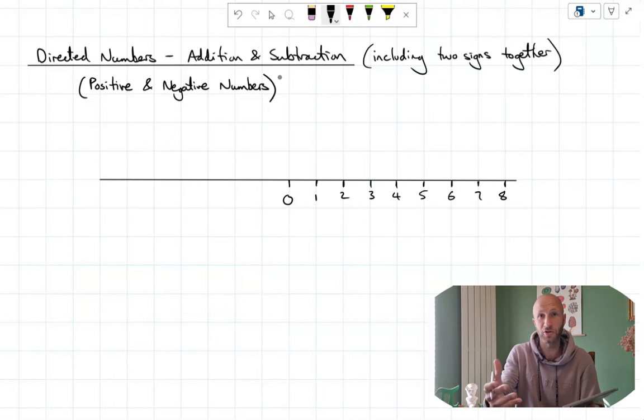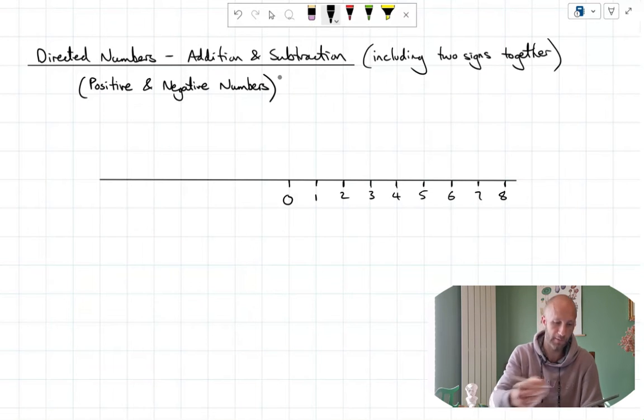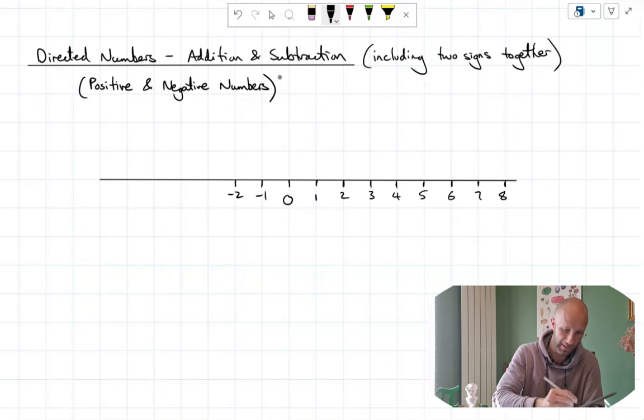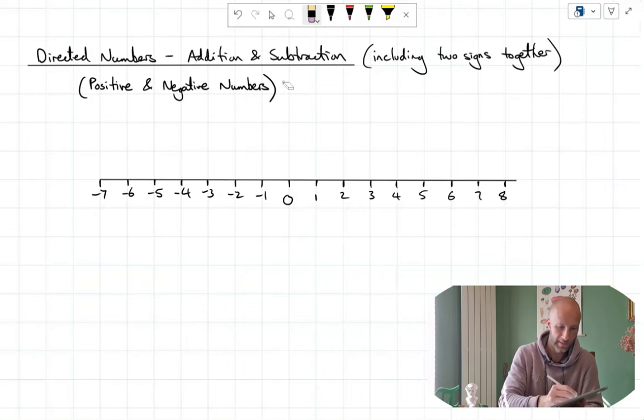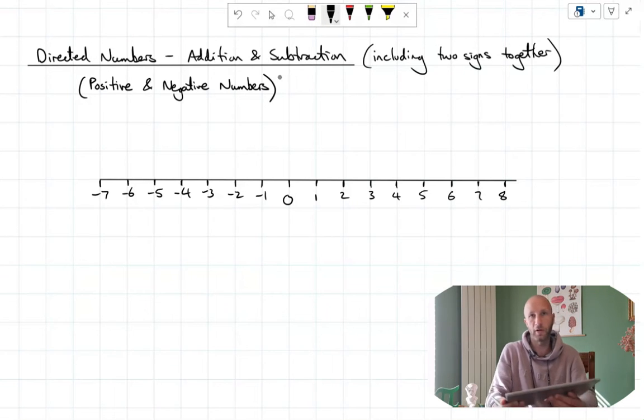So the negative numbers are just an extension of the number line. People kind of get a bit scared by negative numbers, but it's just the same in the opposite direction to positive numbers from zero. So minus one is closest to zero, and we carry on minus two, minus three, etc. I've got room down to about minus six. Let's put minus seven on the end as well. So it's just an extension of our number line.